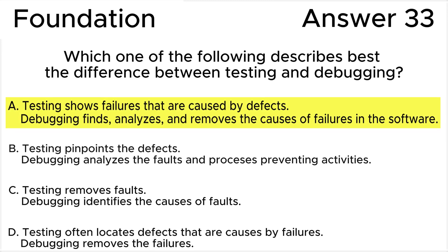The correct answer is A. Testing shows failures that are caused by defects. Debugging finds, analyzes, and removes the causes of failures in the software. This answer is based on the definition of debugging in the ISTQB glossary and the definitions and differences between testing and debugging in the ISTQB syllabus.